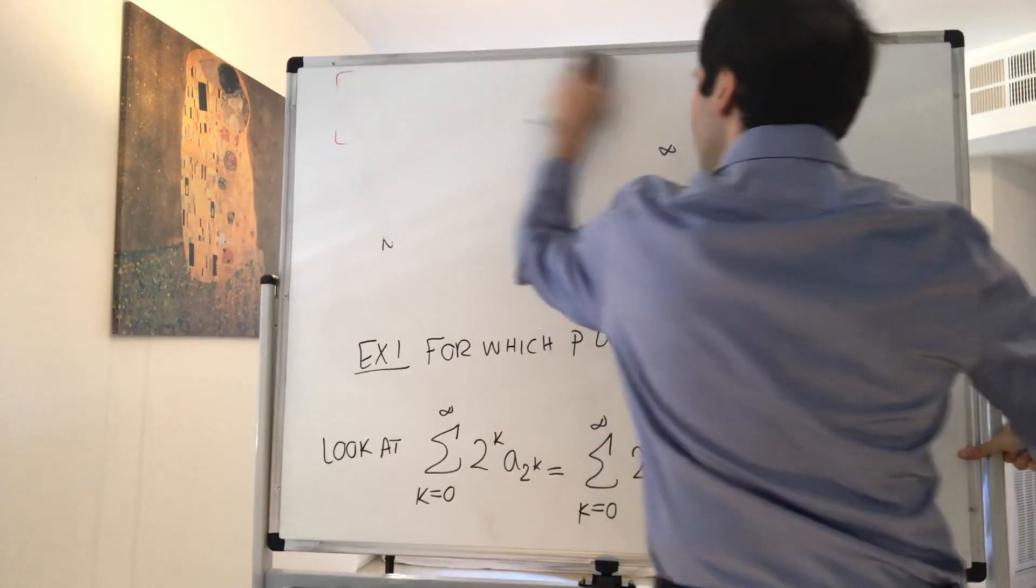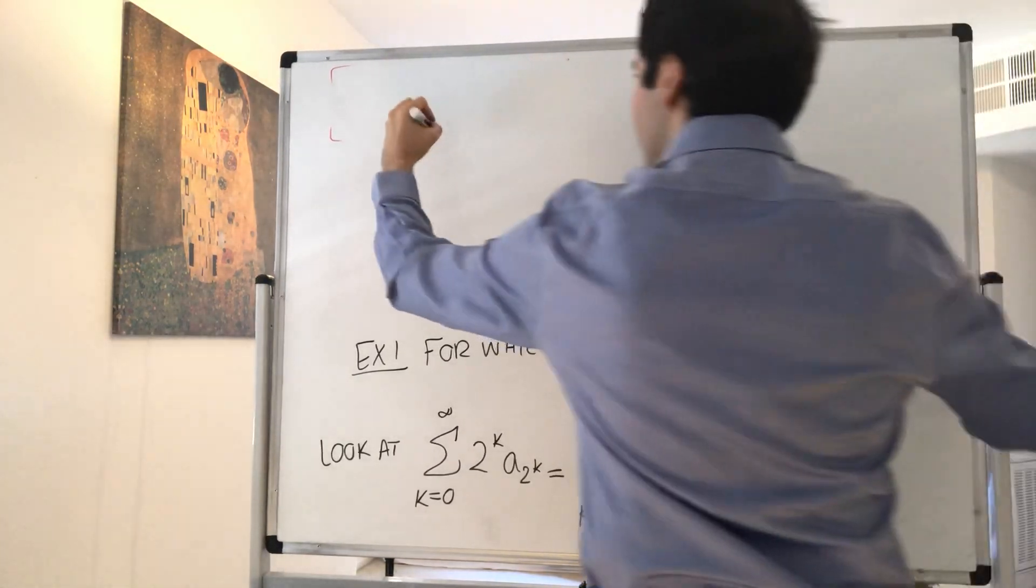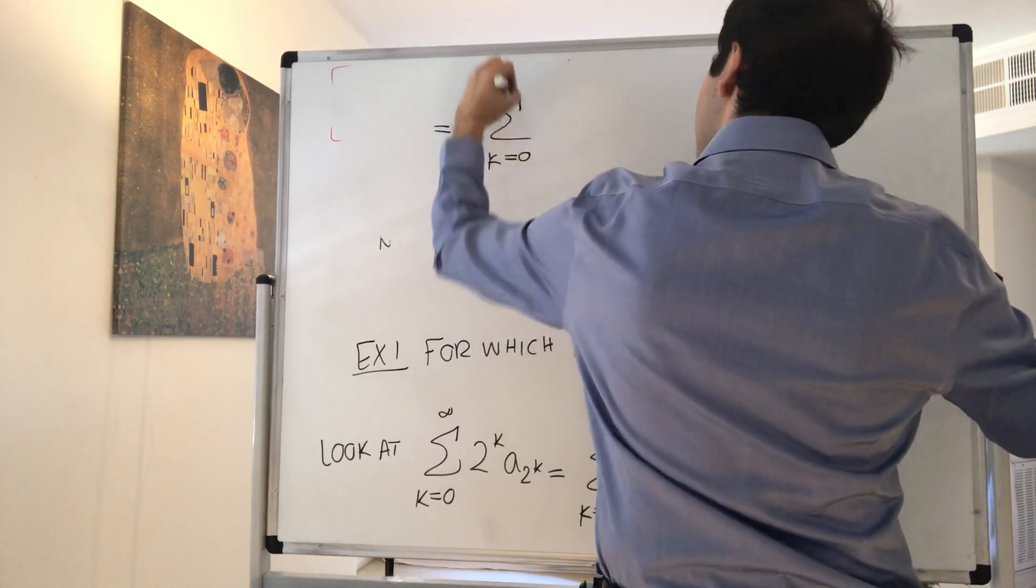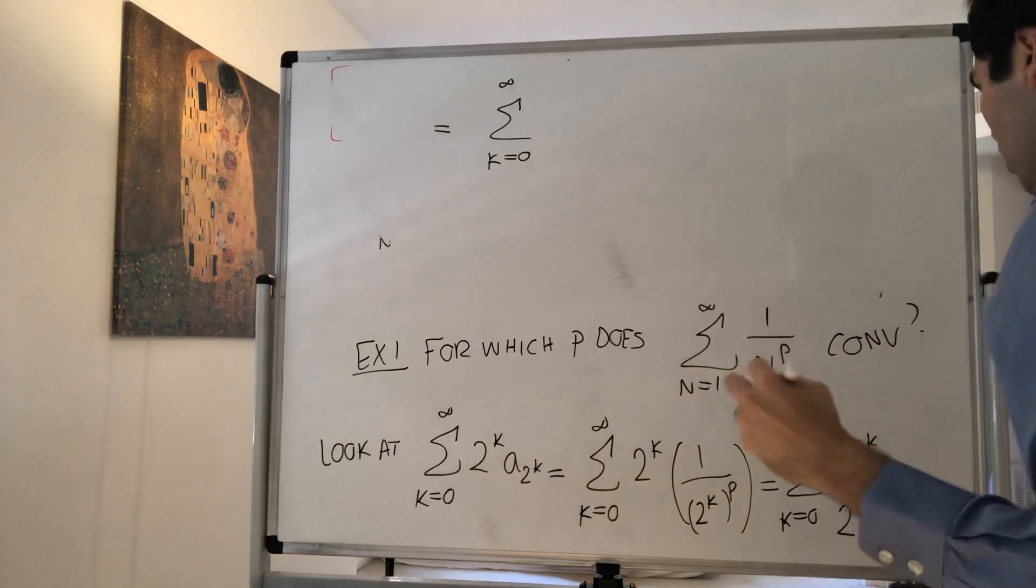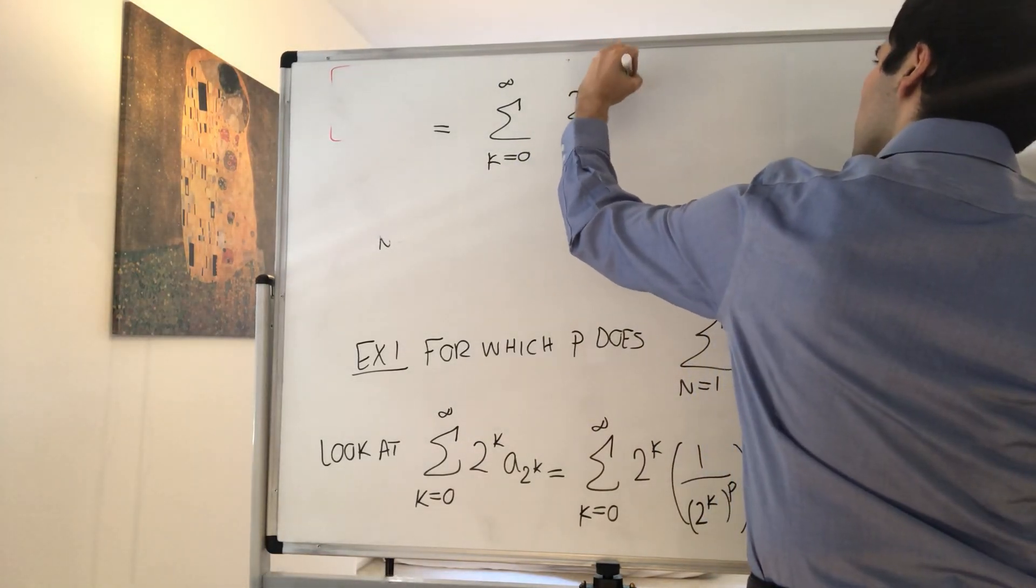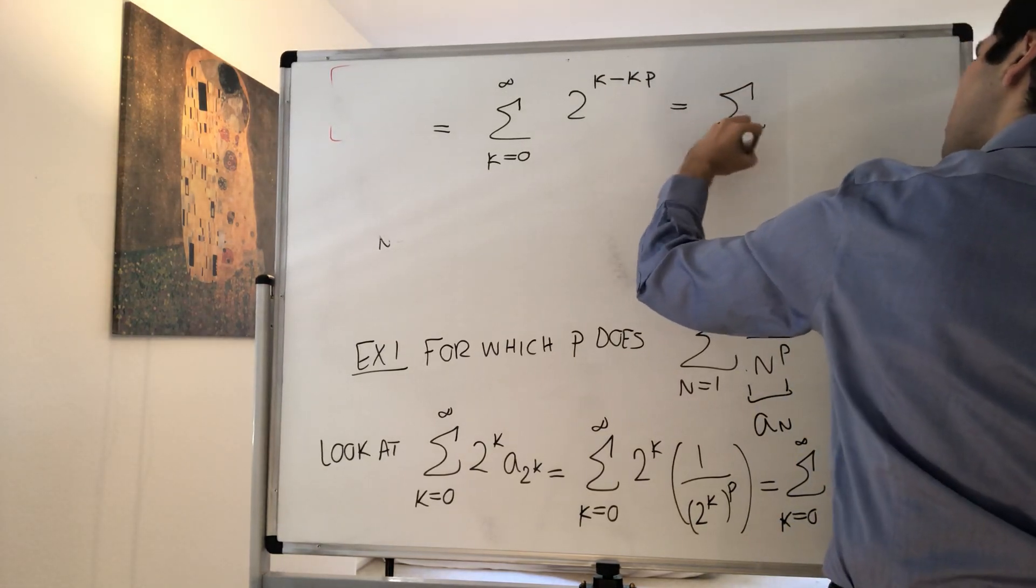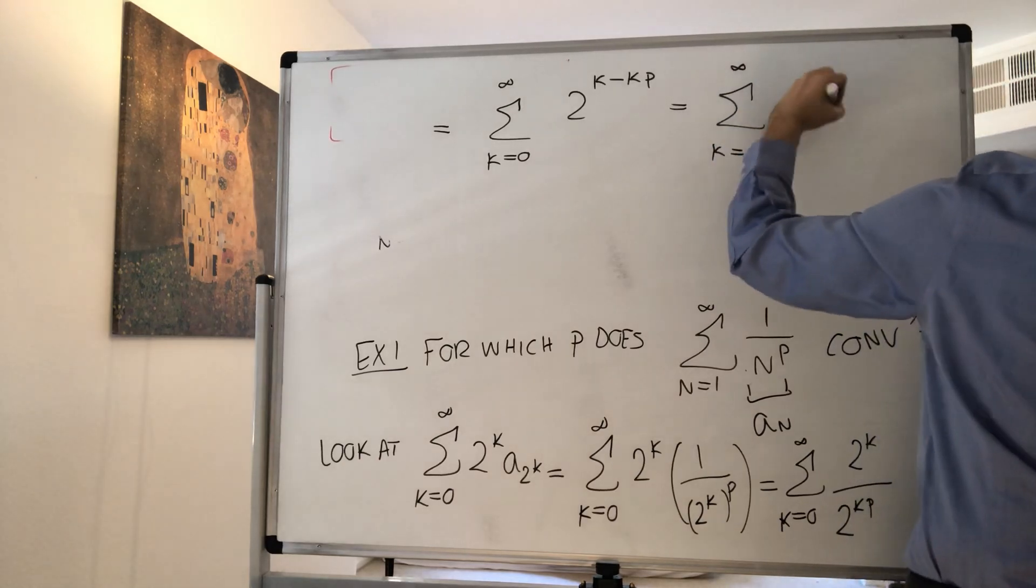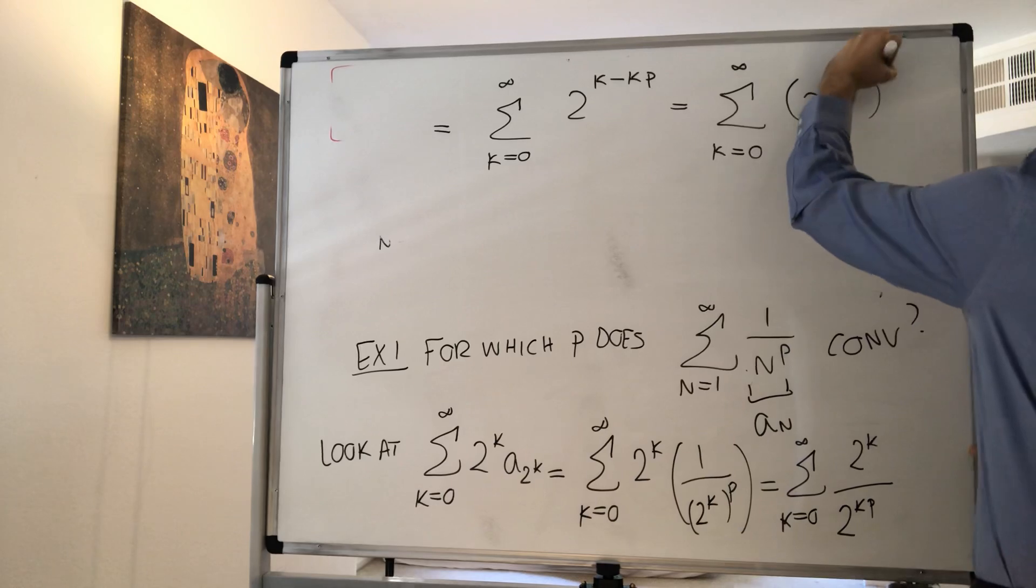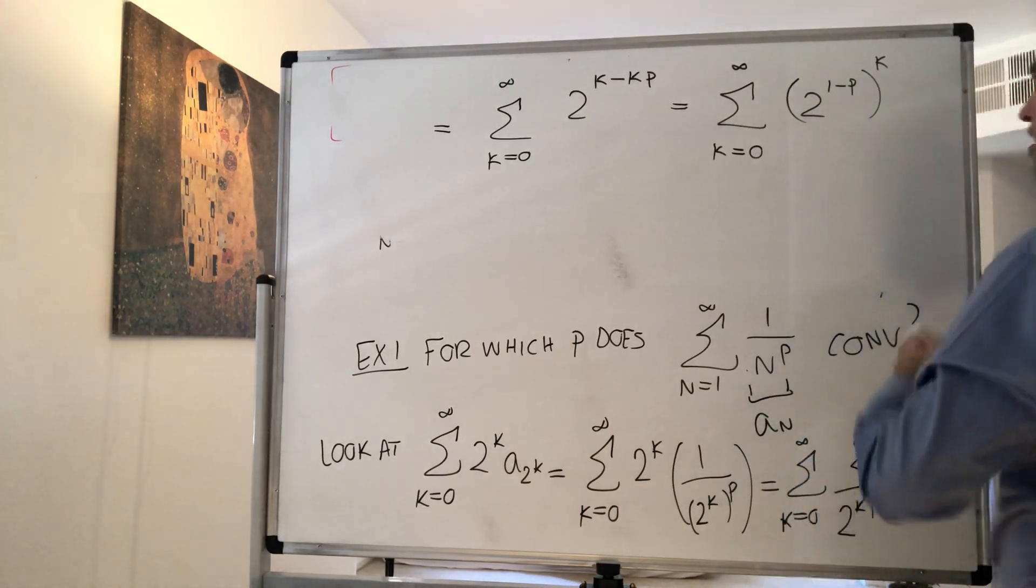And well, you will see soon what this becomes, it's quite nice. That becomes the sum from k equals 0 to infinity of 2^(k - kp), which you can just write as the sum from k equals 0 to infinity of 2^((1-p)k). But notice, this term here is constant.